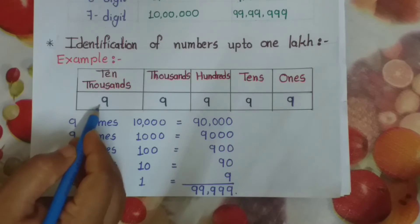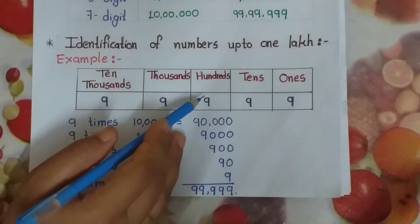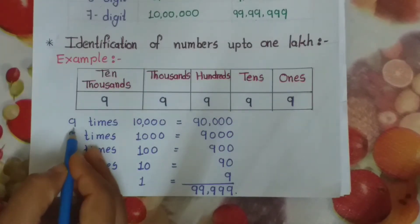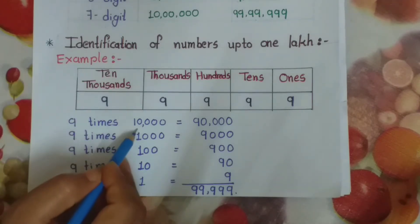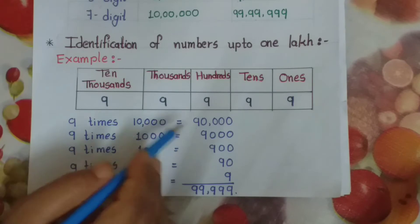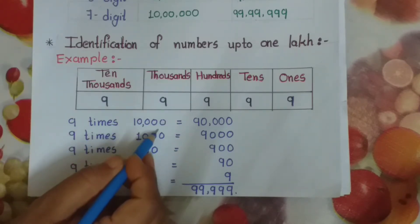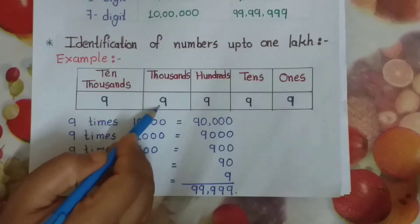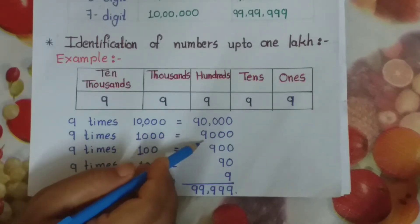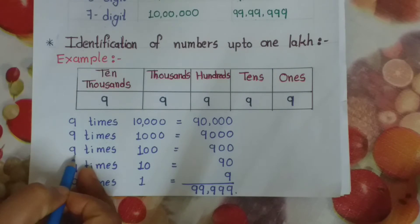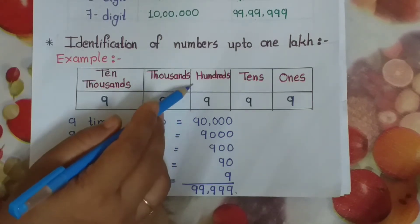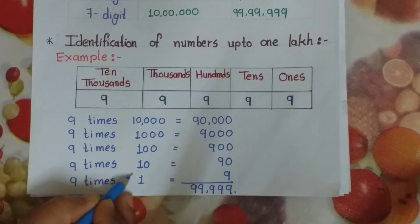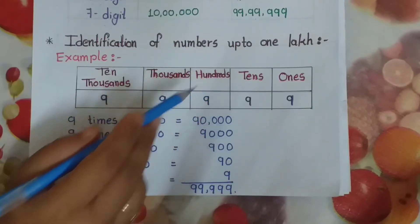In the 10,000s place, 9 is there. 1,000s place also 9. 100s place 9. 10s place 9. 1s place 9. Now, 9 times 10,000 equals 90,000. 9 times 1,000 gives 9,000. 9 times 100 gives 900. 9 times 10 gives 90.